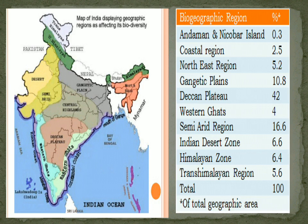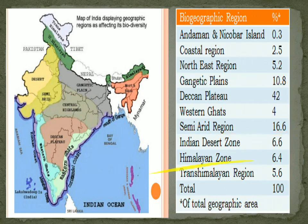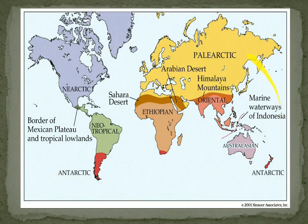In India's biogeographical regions, there are 10 total regions: Trans-Himalayan portions, Andaman and Nicobar, Coastal, North East, Gangetic Plains, Deccan Plateau, Western Ghats, semi-arid areas, desert areas, and the Himalayan zone. Remember the percentage rankings from first to last — semi-arid regions and Gangetic Plains are important to remember.